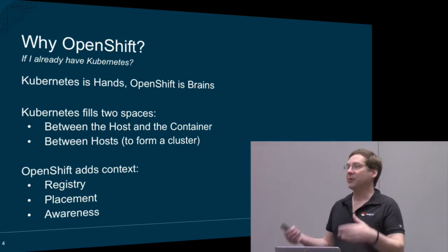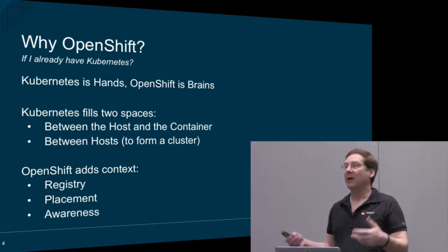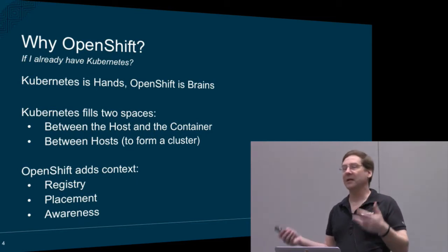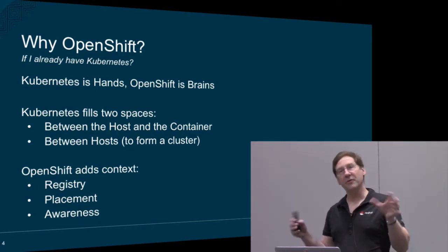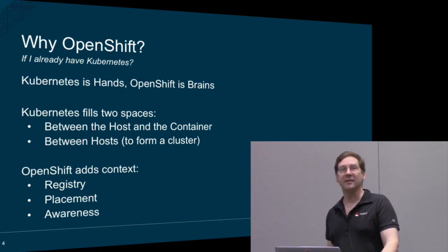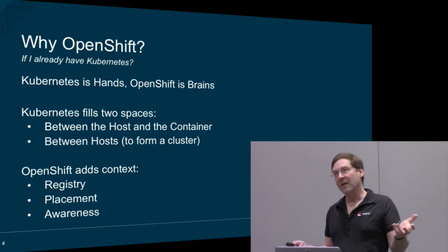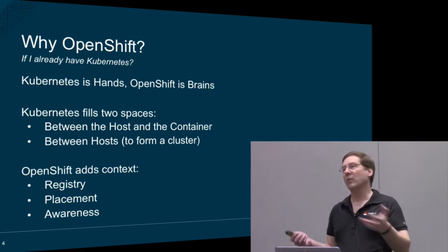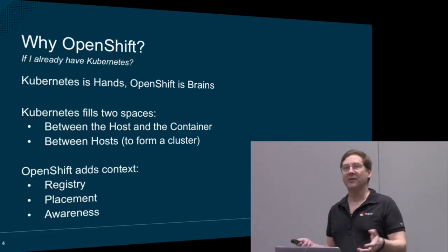OpenShift gives you a nice graphical user interface, some project management, and the ability to do more controlled isolation between projects. So if you're looking at Kubernetes and OpenShift and wondering what the difference is, there's your answer.